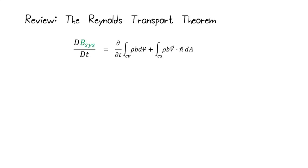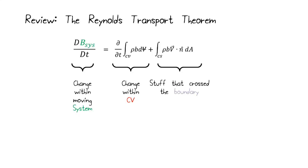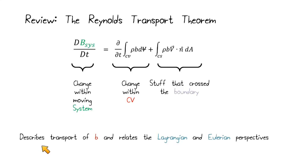Let's start again with our review. What is the Reynolds Transport Theorem? It says that the rate of change of a property within our system — our moving packet of mass with respect to time — equals the rate of change with respect to time of that property inside our control volume, which is the stationary thing, plus the rate at which that property enters and leaves our control volume through the control surface. We have the change within our system, the change within our control volume, and the stuff that crossed the boundary. We're talking about transport of B, relating the Lagrangian perspective, which is the system, and the Eulerian perspective, which is the control volume.